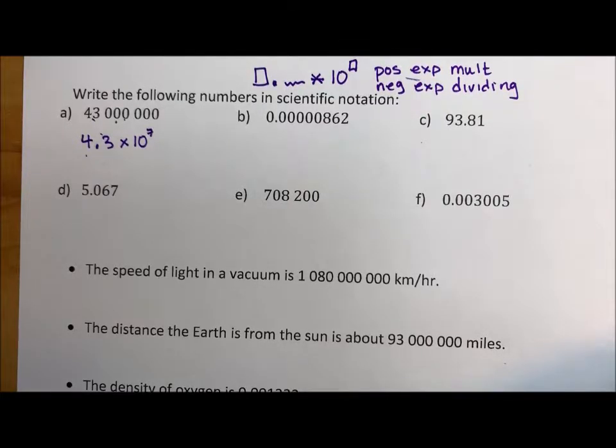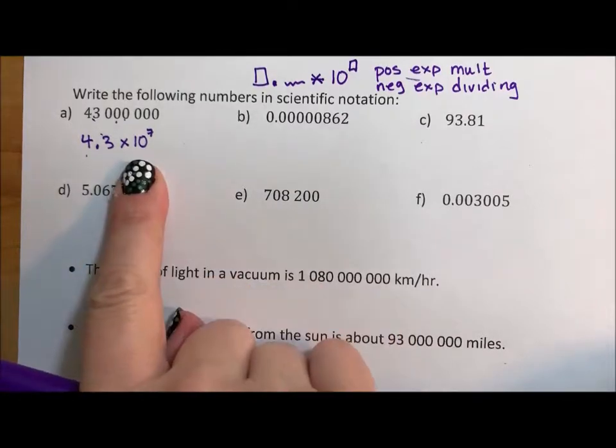10 controls your decimal point. So when you multiply by 10, you move your decimal point over. When you divide by 10, you move your decimal point back. So 10 is the controller of your decimal point, that's why our scientific notation has the 10.